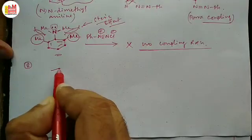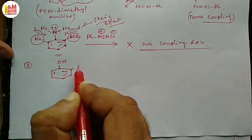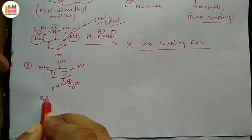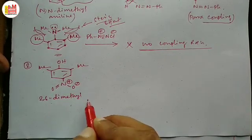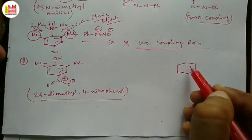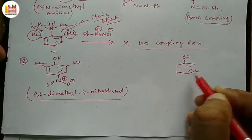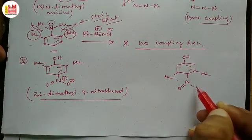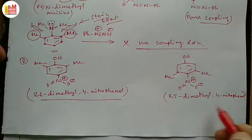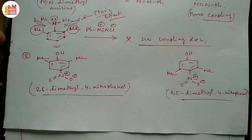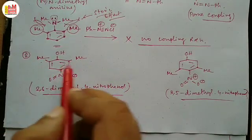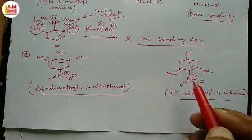Now let's move to example number two. This is 2,6-dimethyl-4-nitrophenol and we also have 3,5-dimethyl-4-nitrophenol. These two structures are basically isomers, but the position of the methyl groups is different. In the first, two methyl groups are in the ortho positions with respect to the OH group; in the second, the methyl groups are in the meta positions with respect to the OH group.